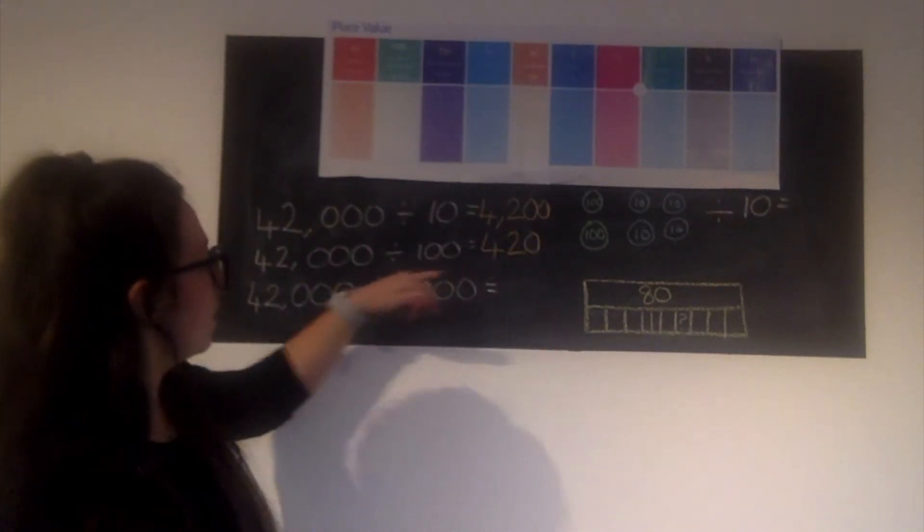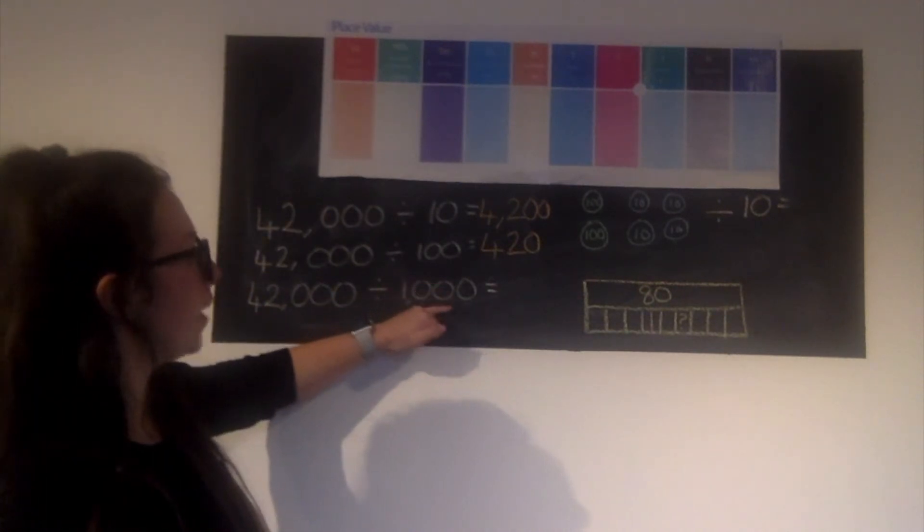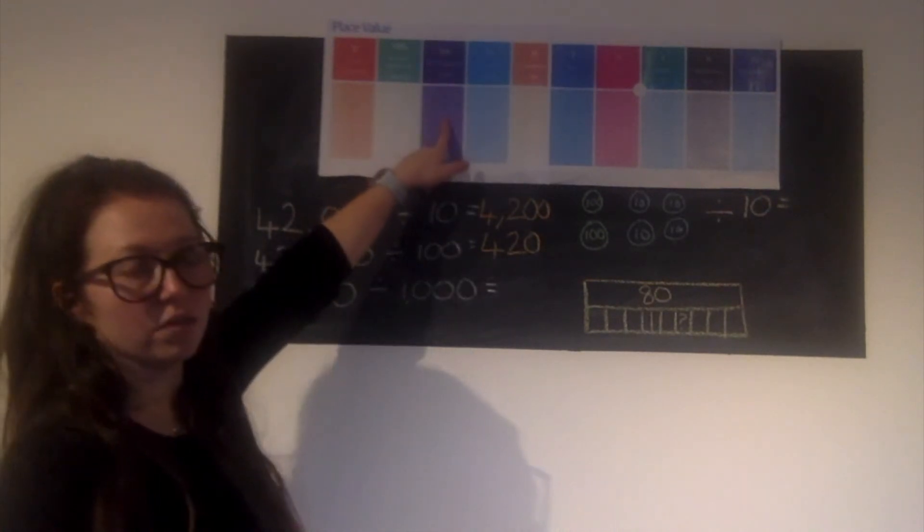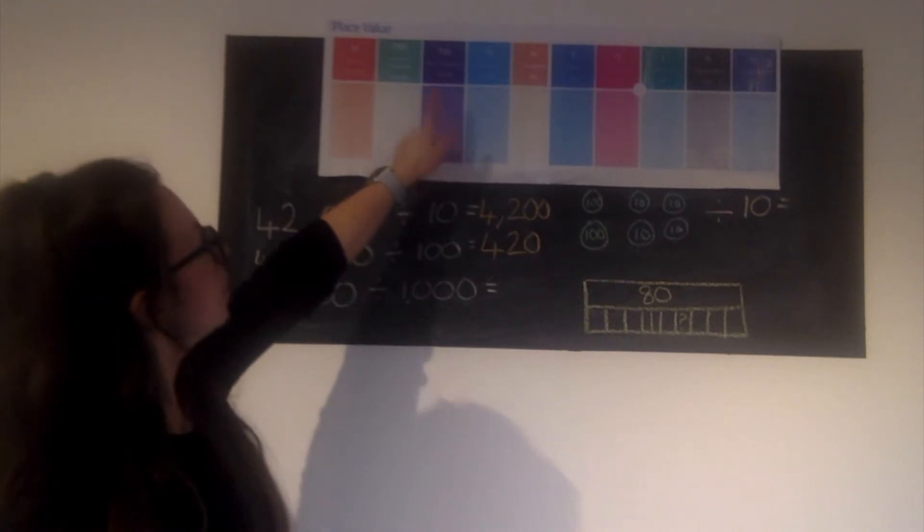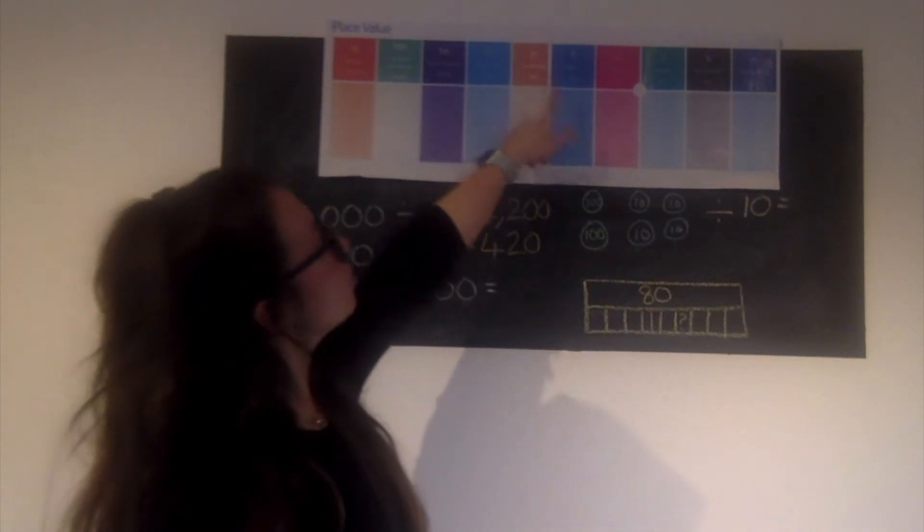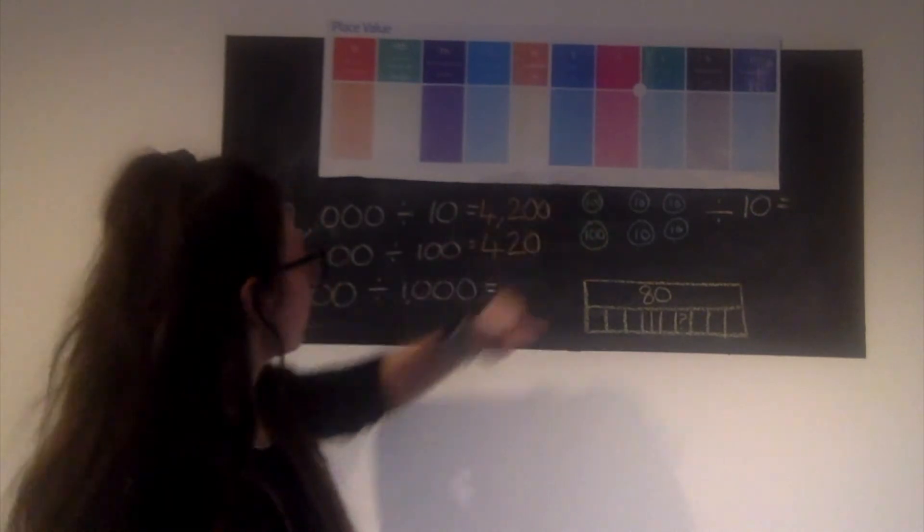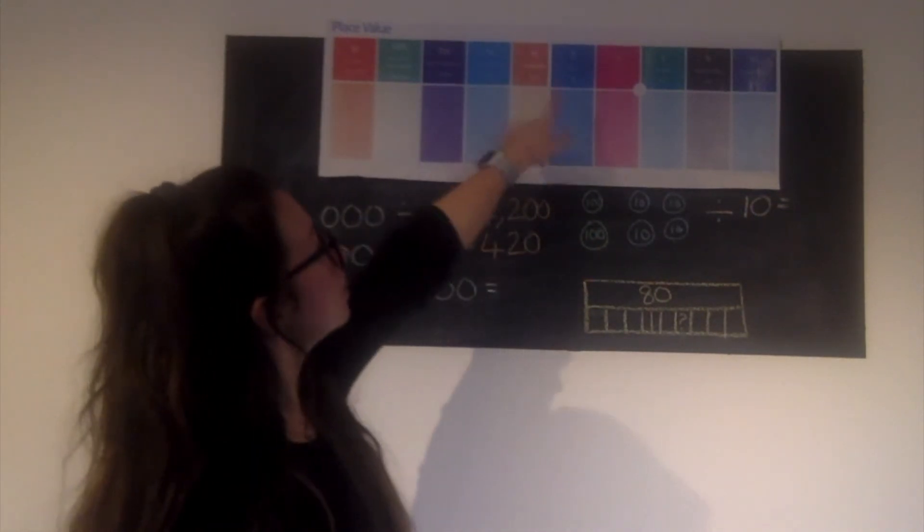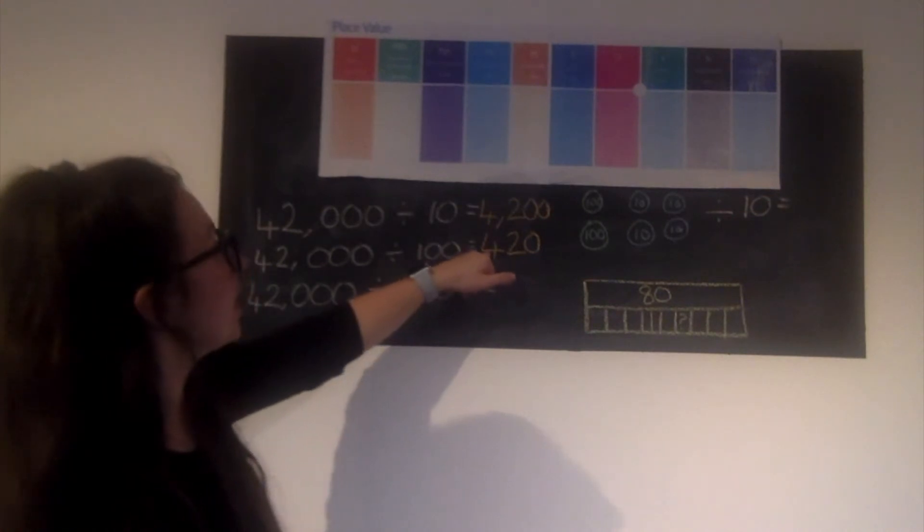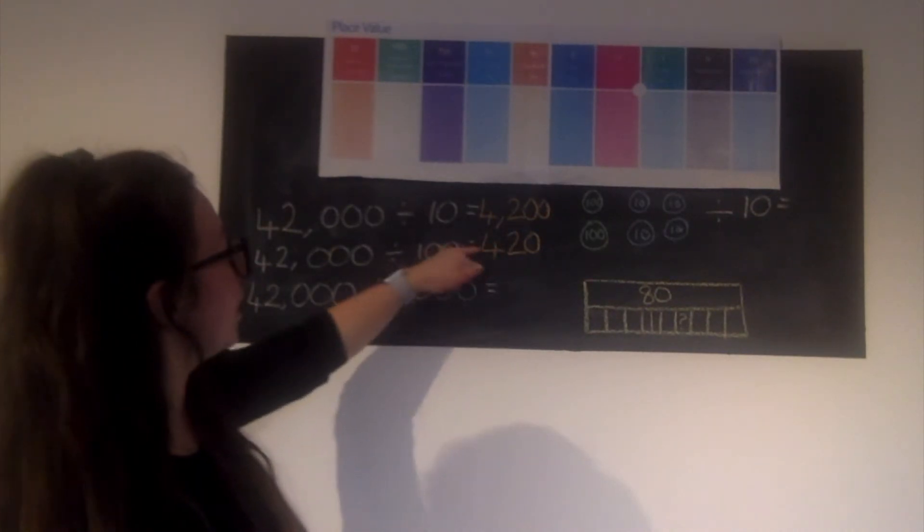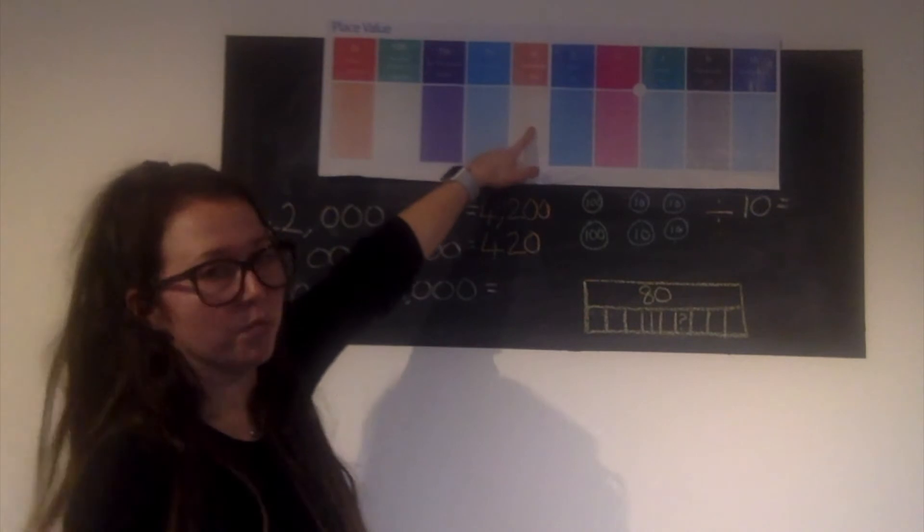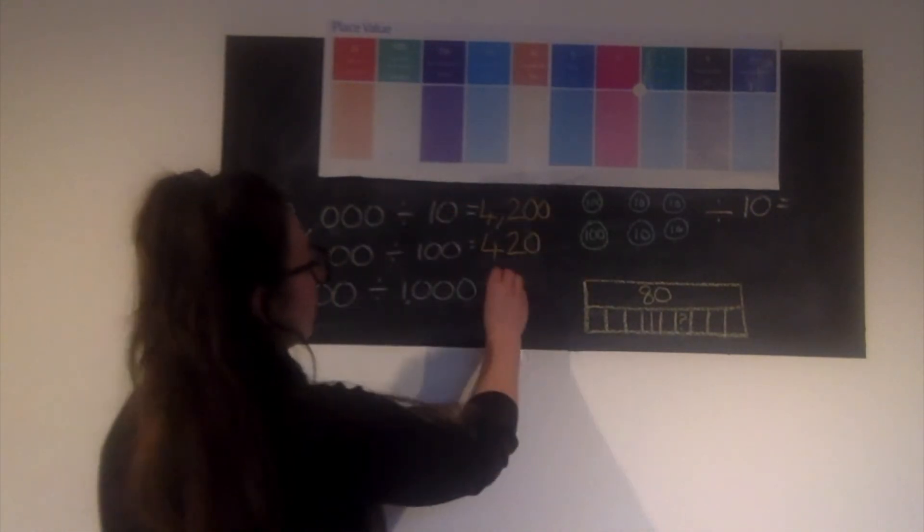Hopefully you're starting to spot a pattern. This time I've got the same number and I'm dividing by 1,000. So again I've got two choices. I'm going to start off from the start. So 42,000, 4 ten thousands. This time I'm moving three places. So 4 ten thousands, 10 times smaller gets to 1,000s, 10 times smaller again gets me to 100s, 10 times smaller again gets me to 4 tens. Same with my thousands - my 2,000 divided by 10, divided by 100, divided by 1,000. Or the second option is I've already divided it by 100, so I make it 10 times smaller again, because 100 times 10 gives us 1,000. So 420, 4 hundreds divided by 10, 10 times smaller. So our answer should be 42.